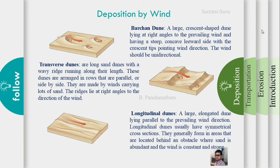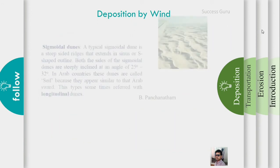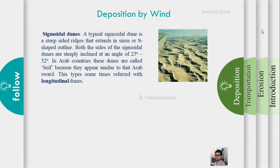Longitudinal dunes are parallel to the wind direction. The sigmoidal dune is S-shaped with an angle of 25 to 30 degrees. It is symmetric in form.